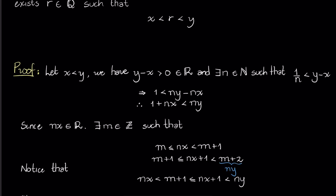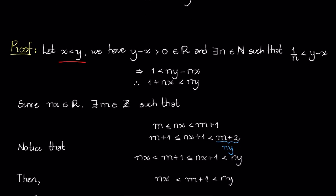For the proof, we have that if x is less than y, that's our hypothesis, then we have that y minus x is greater than zero, and this is by ordered field axioms. If this happens, then we have an Archimedean property consequence that says that for every epsilon greater than zero, there exists a natural number such that 1 over n is less than epsilon.